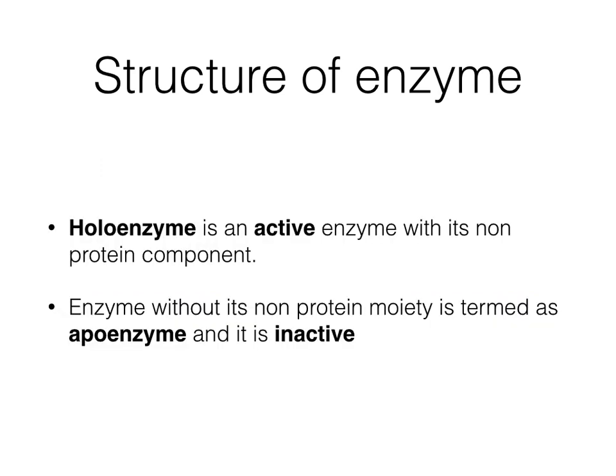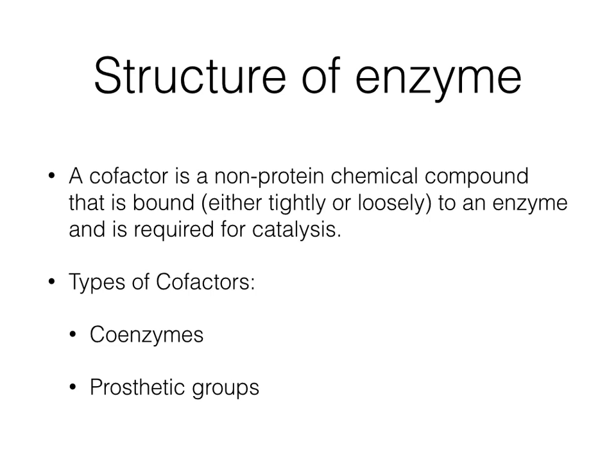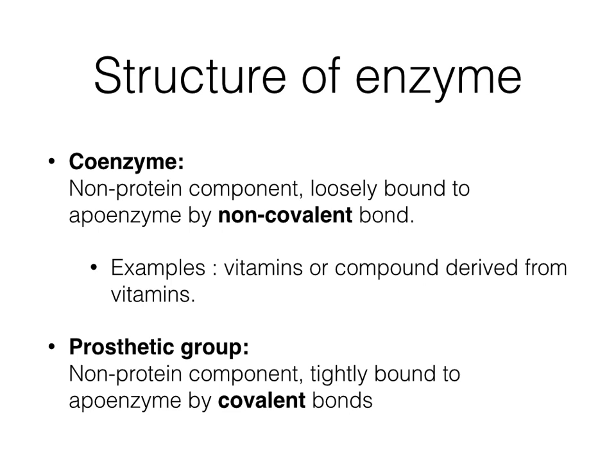To recap: enzymes are referred to as a holoenzyme when it is the active enzyme and it is complete — all the non-protein components are present. However, an enzyme without its non-protein portion is termed the apoenzyme and by itself is inactive. The non-protein part of an enzyme is called the cofactor, and there are two types: coenzymes and prosthetic groups. A coenzyme is loosely bound to the apoenzyme by non-covalent bond, exemplified by vitamins or compounds derived from vitamins. Prosthetic groups are tightly bound to the apoenzyme and are rather difficult to separate from the apoenzyme itself.